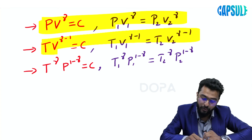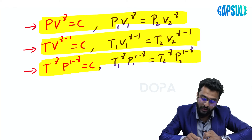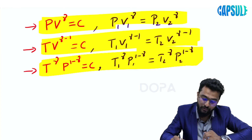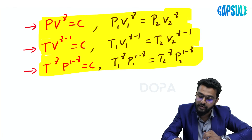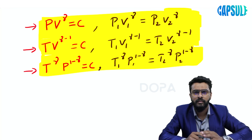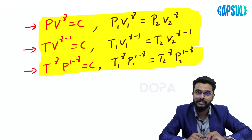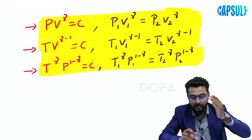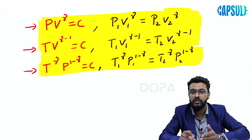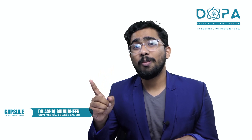So those are the relations between pressure, temperature, and volume in adiabatic process. If you study these three equations, you can easily solve problems from the chapter thermodynamics. Please study these three equations thoroughly.